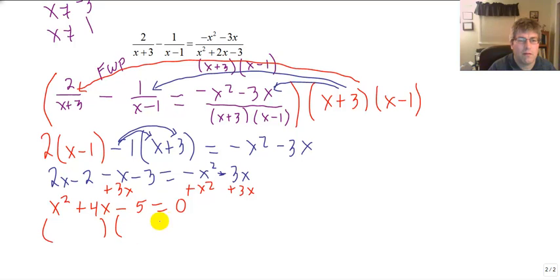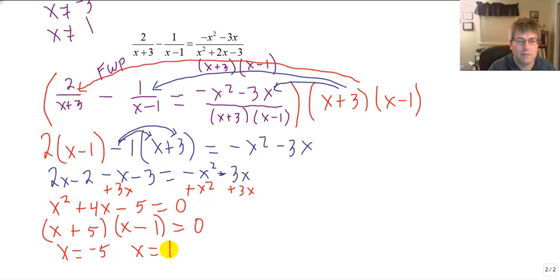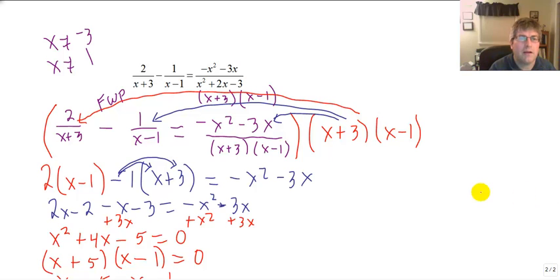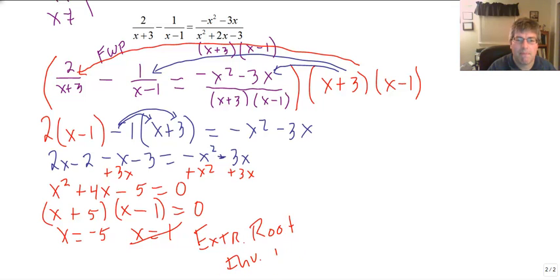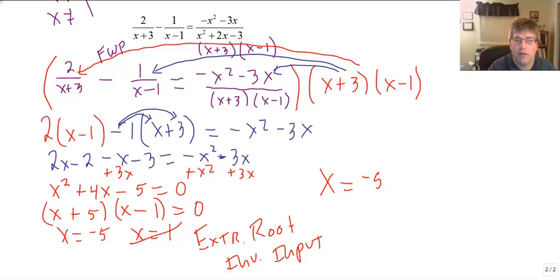We have a quadratic with a=1. We need factors of negative 5 that add to 4, which is plus 5 and minus 1. So we get x equals negative 5 and x equals 1. But going back to our restrictions, x cannot equal 1 — that's an illegal, invalid solution. Even though 1 would work algebraically, it forces the denominator to be 0, making it an extraneous root. So our final answer is x equals negative 5.